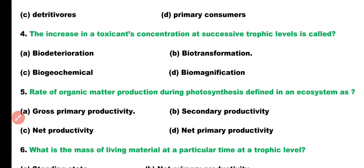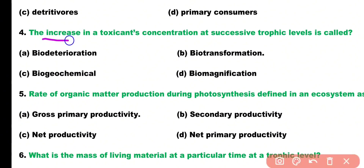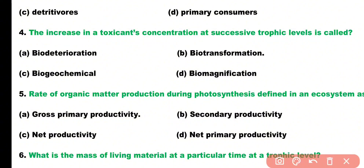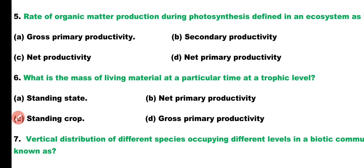Question number four. Increase in toxicant concentration at successive trophic levels is called: biodeterioration, biotransformation, biogeochemical, or biomagnification?